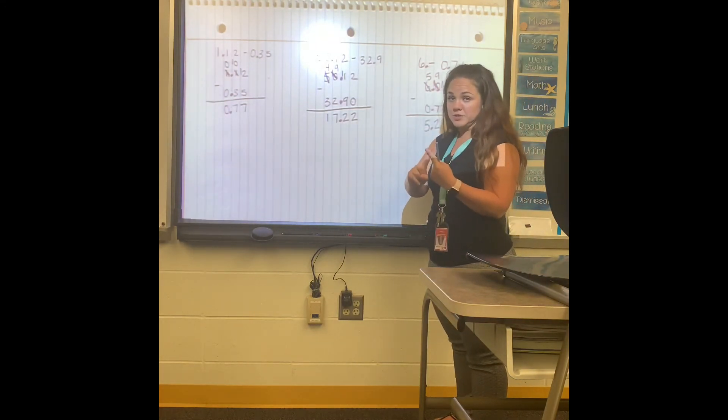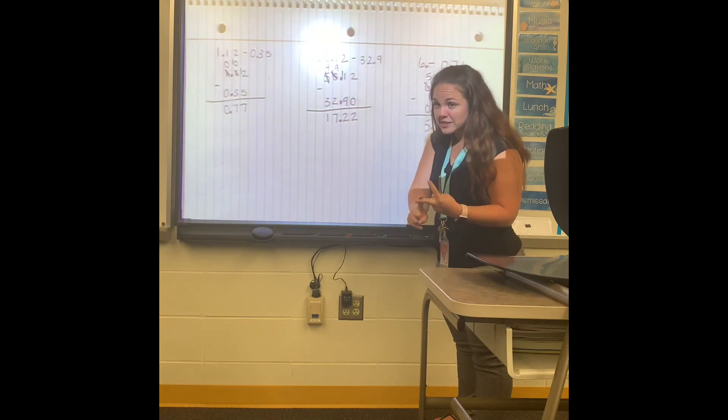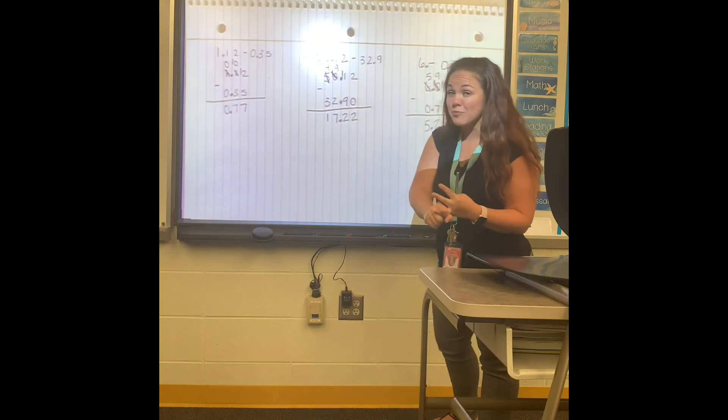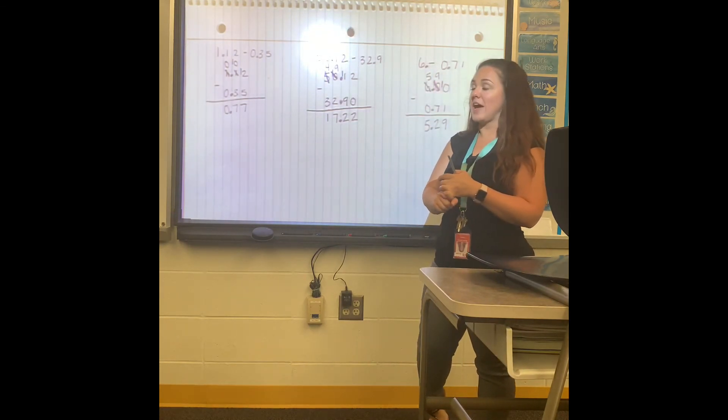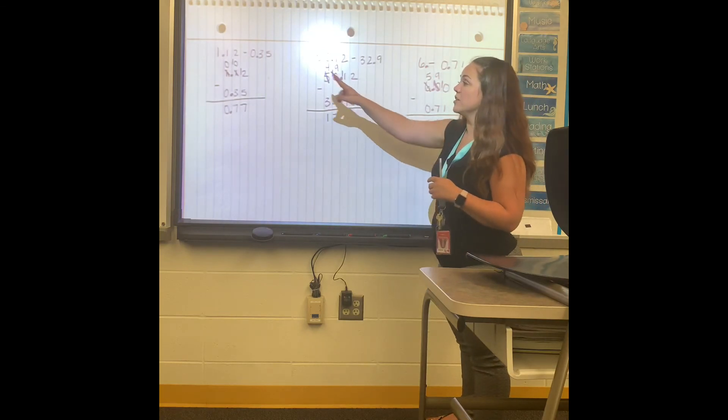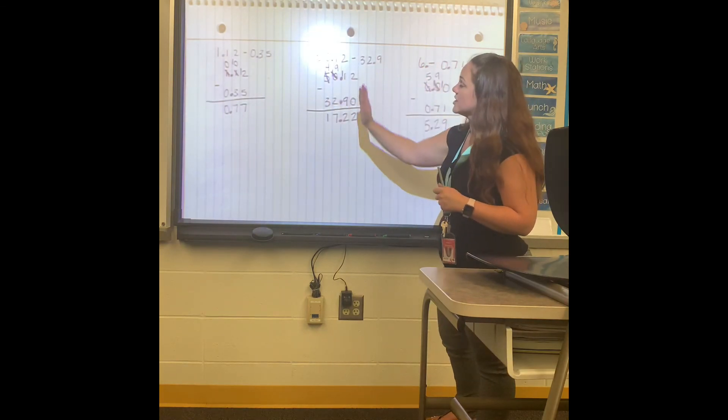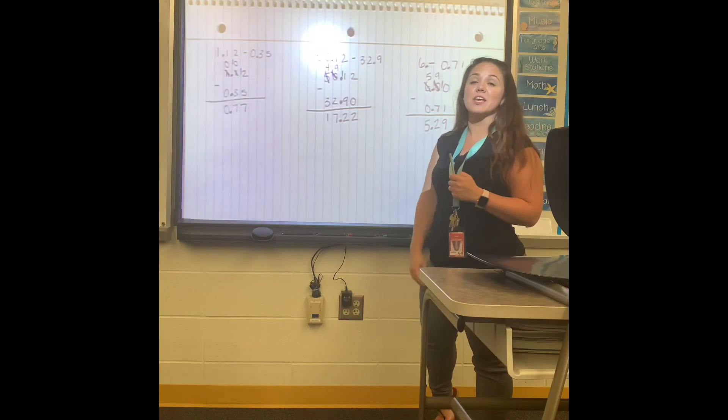So that is how you add and subtract decimals. Line up the decimals first. Fill in the numbers correctly. Then add or subtract. Make sure you add in any of those zeros. Then bring down your decimal after you add and subtract. Fill in those zeros. Make sure that the decimals are lined up, and then I think you should be good.